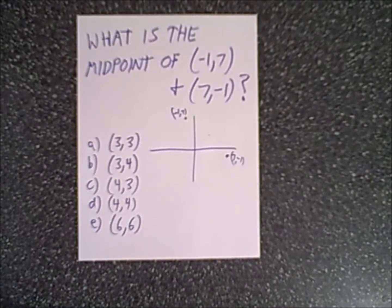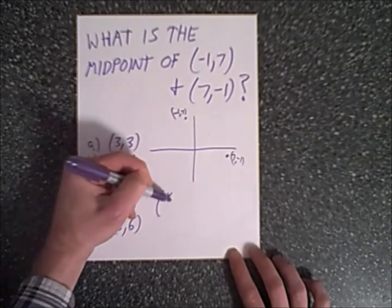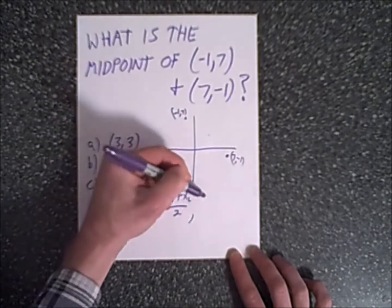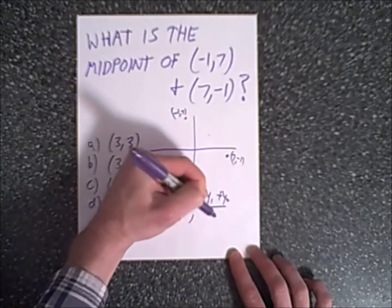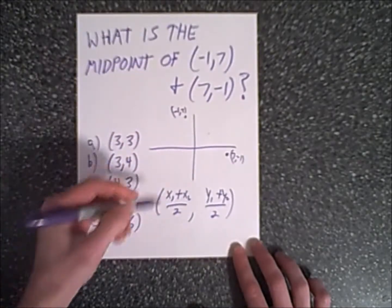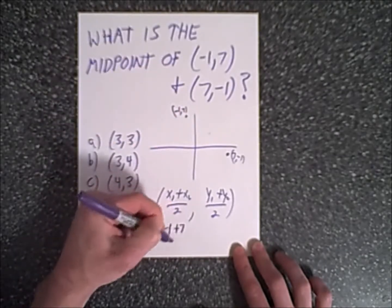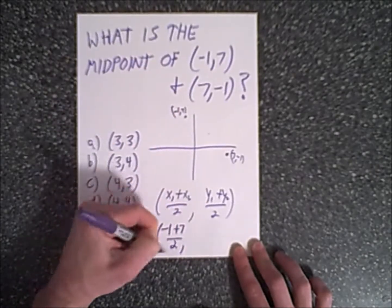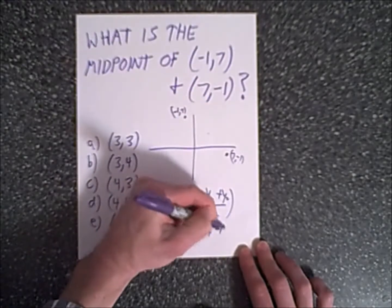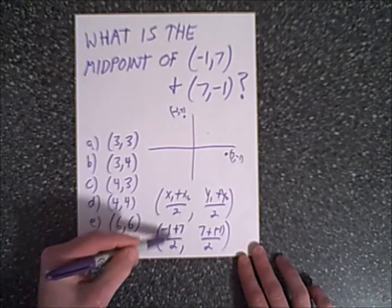A lot of you might have memorized the midpoint formula, which is simply saying you take x1 plus x2 over 2 as your x coordinate, and y1 plus y2 over 2 as your y coordinate. If we were to do that, we would substitute negative 1 plus 7 divided by 2, and we would have 7 plus negative 1 divided by 2 as our y coordinate.